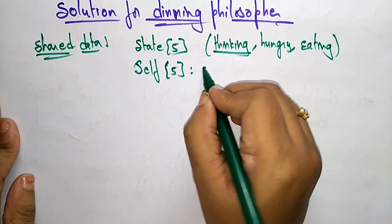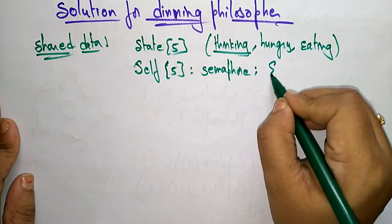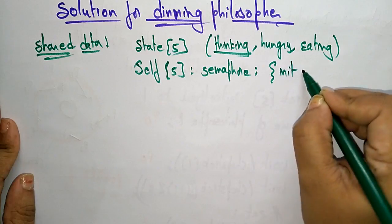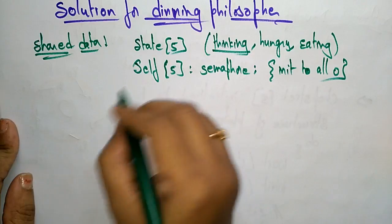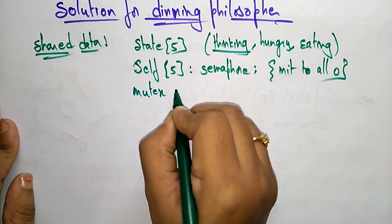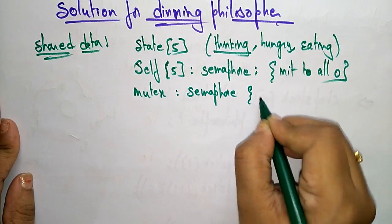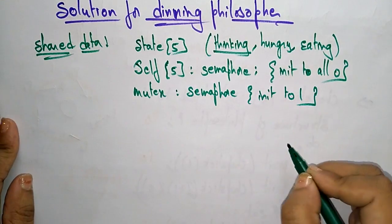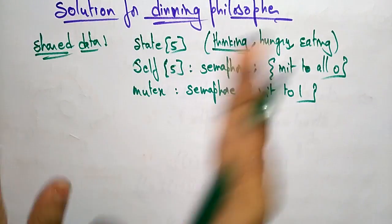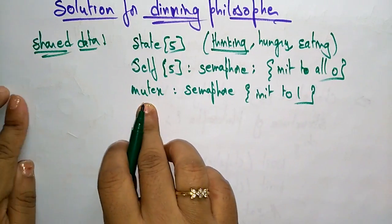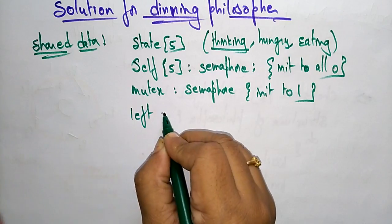I am taking the variable self[5], which is a semaphore variable initialized to zero — all philosopher self values start at zero. I am also taking another variable mutex, which is a semaphore variable initialized to one. So self is initialized to all zeros and mutex is initialized to one.